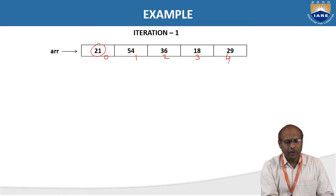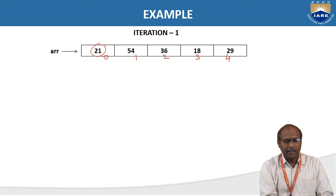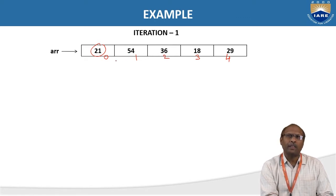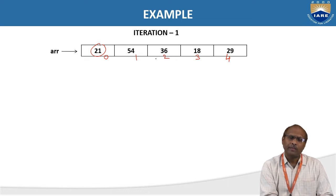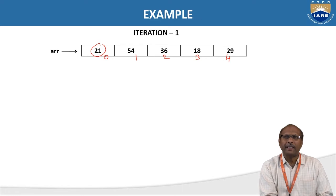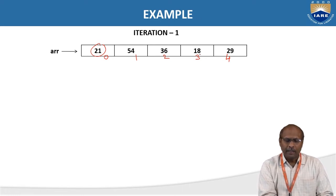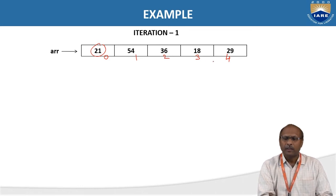Compare the zeroth element with the first element: is 21 greater than 54? No, so no need to swap. Then check 54 with 36 — is 54 greater than 36? Yes, so swap. After swapping, 54 comes to this position. Again compare 54 with 18: 54 is greater than 18, then swap. Then 54 with 29, then swap. Like this, it keeps swapping.